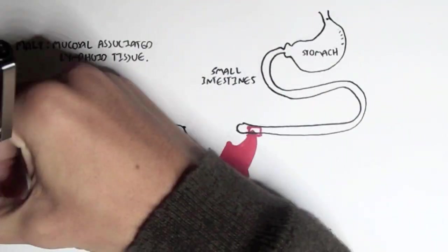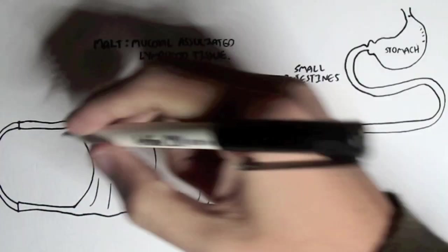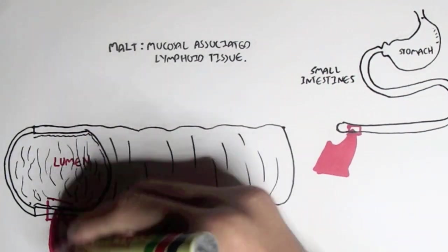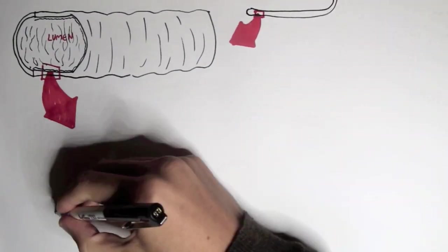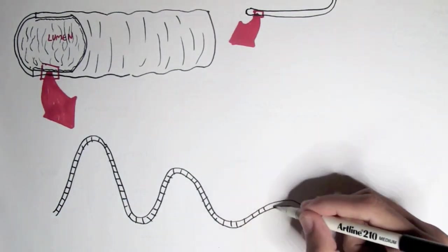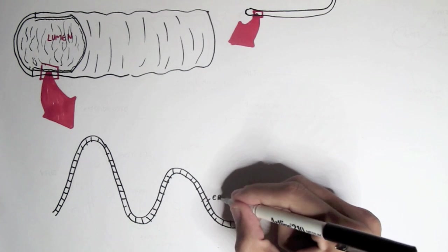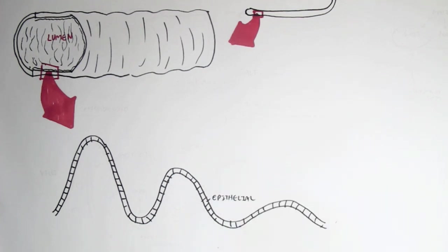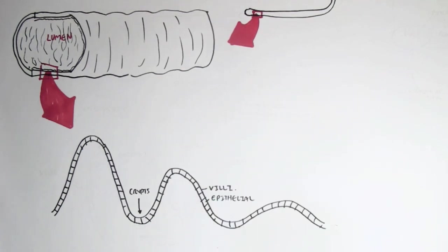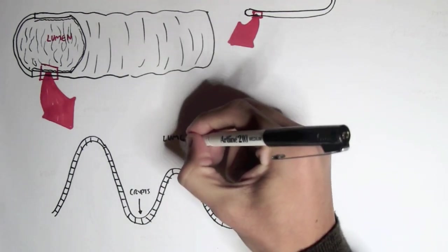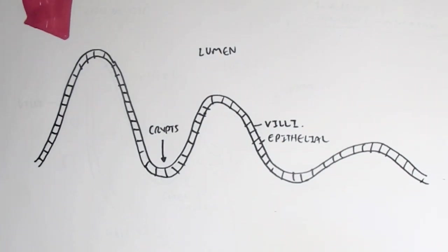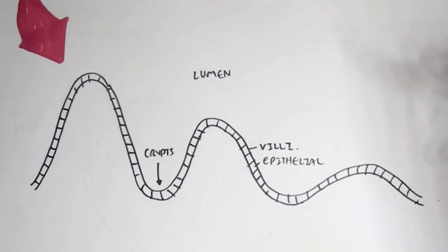Here we have the stomach and the small intestines. Let's take a section of the small intestines. Here we have the lumen of the small intestines. So this is what we see in a very simplified form. We see the villi, we see epithelial cells containing villi and forming crypts within the small intestines. And therefore here is the lumen where the food passes through and where bacteria also can pass through as well.